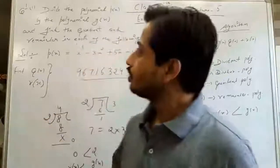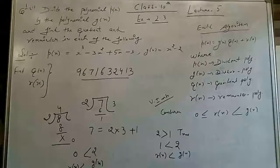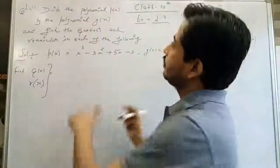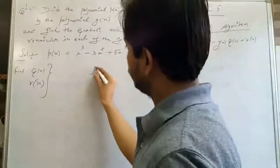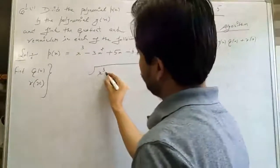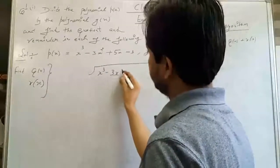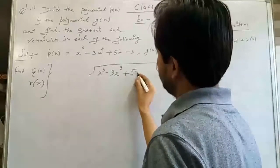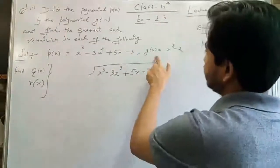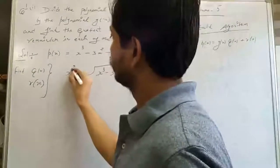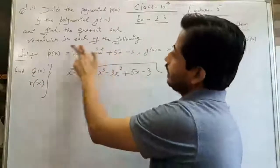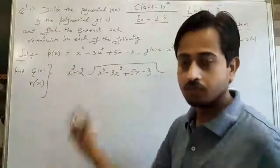Please make a note first, then we will try to solve our first question. The first question is: divide the polynomial P(x) = X³ − 3X² + 5X − 3 by G(x), and find the quotient Q(x) and remainder R(x).